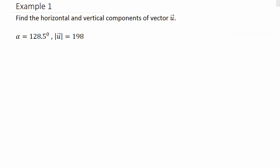Alright, so here they want us to find the horizontal and vertical components of some vector u. So they give us the direction angle alpha which is 128.5 degrees and the magnitude of u is 198.